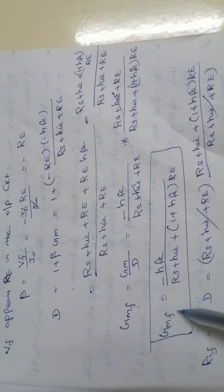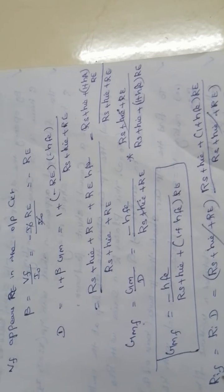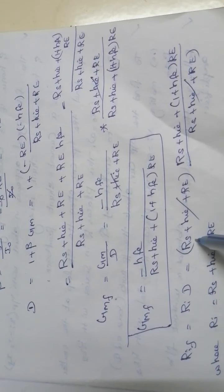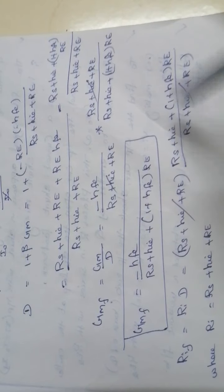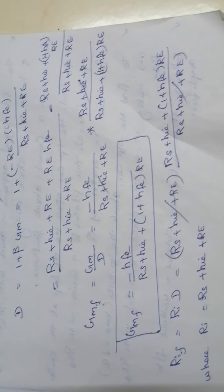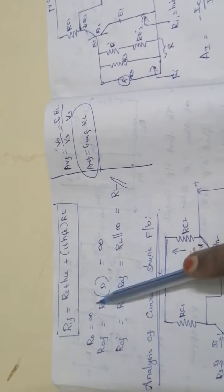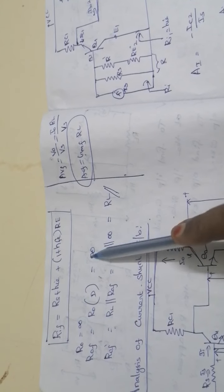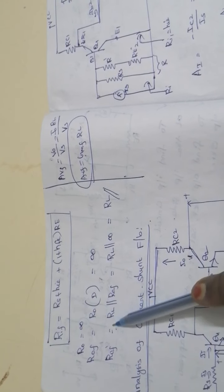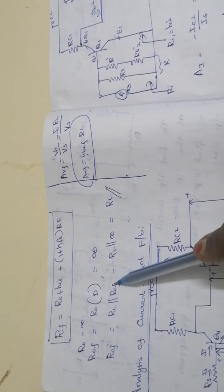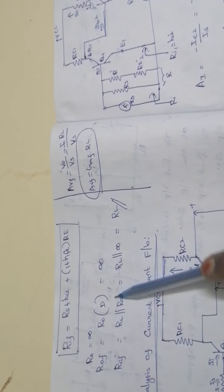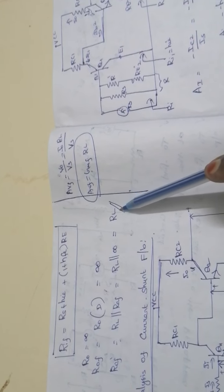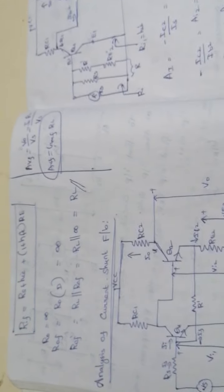Next, to find the input resistance with feedback: Rif equals Ri times D. The D factor is known, and Ri is the input resistance Rs plus hie plus Re. Substituting and simplifying, we get the Rif value. For output resistance, R0f equals R0 times D, which becomes infinite. R0f' accounting for RL is RL parallel with the effective resistance. Since the output resistance with feedback is infinite, the output resistance equals RL. That covers the analysis of current series feedback.